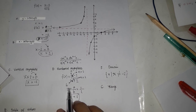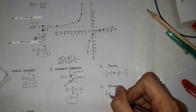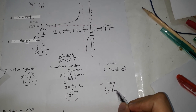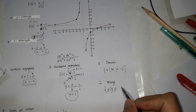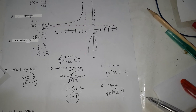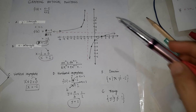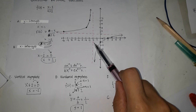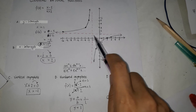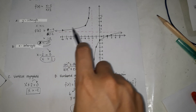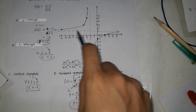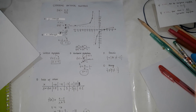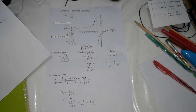For the range, look at the horizontal asymptote. The range is: y such that y is not equal to 1. That means all values of y have a corresponding x value, except y equals 1, because the graph never passes through y equals 1. That's how we graph a rational function.